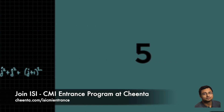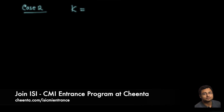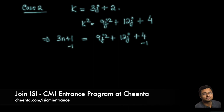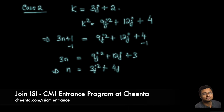So in Case 1, when k = 3j + 1, we get the desired result: n + 1 is the sum of the squares of j, j, and j + 1. We can finish Case 2 in exactly the same way. Case 2 is when k divided by 3 gives remainder 2, i.e., k = 3j + 2, so k² = 9j² + 12j + 4. Thus 3n + 1 = 9j² + 12j + 4, and subtracting 1 from both sides gives 3n = 9j² + 12j + 3. Dividing by 3: n = 3j² + 4j + 1.